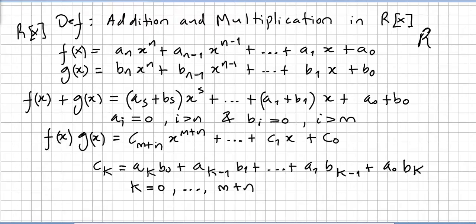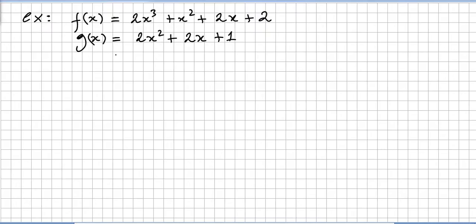For multiplication, f(x)·g(x) = c_{m+n} x^{m+n} + c_{m+n-1} x^{m+n-1} + ... + c_1 x + c_0, where c_k = a_k b_0 + a_{k-1} b_1 + ... for k = 0, 1, ..., m+n. This is just the usual distributive multiplication — the notation is heavy but the idea is straightforward.